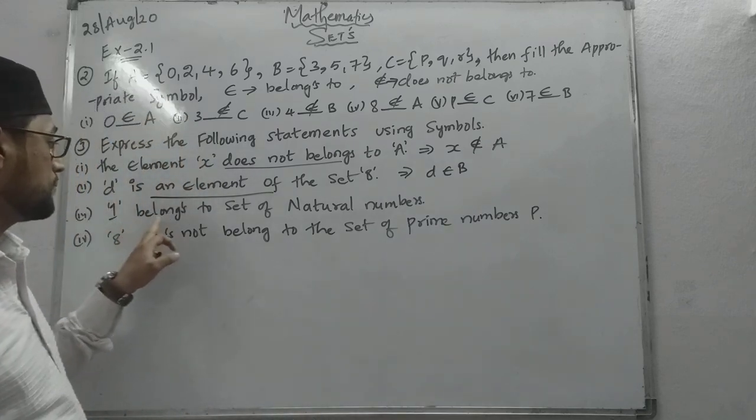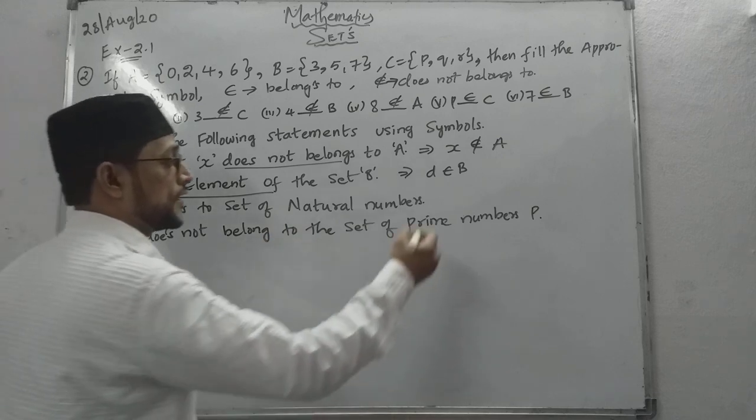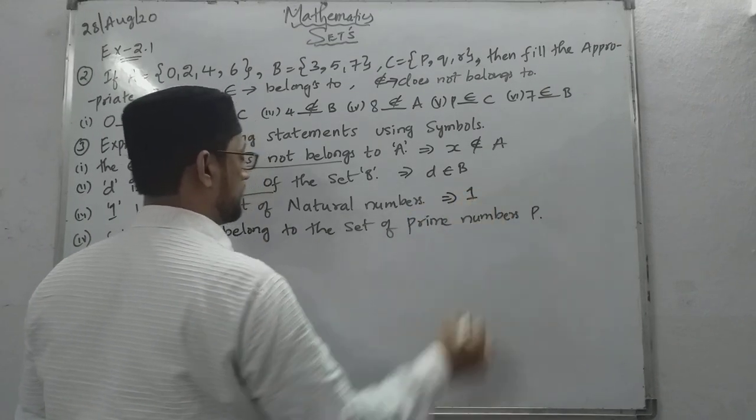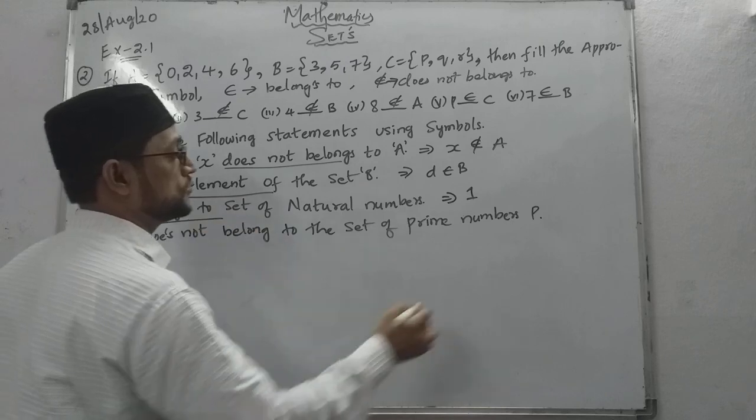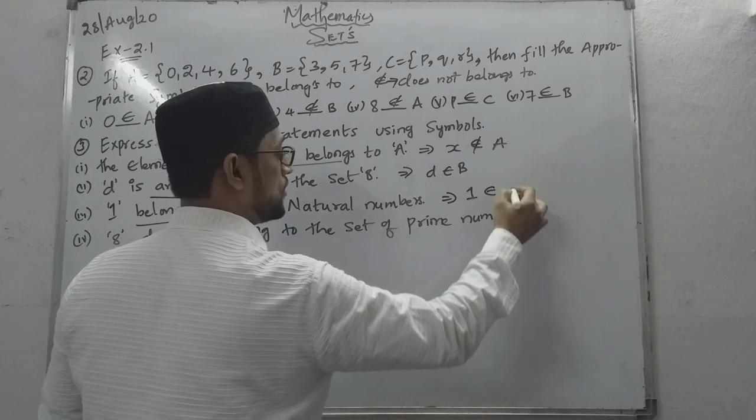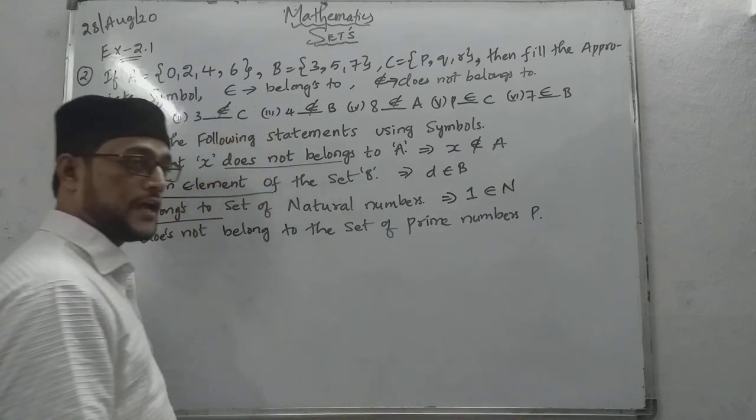Now 1, 1 belongs to the set of natural number. Again, 1 belongs to, that means symbol belongs to, natural number short form is capital N.